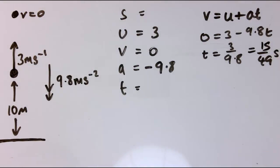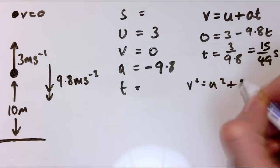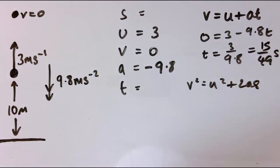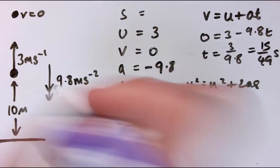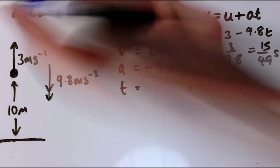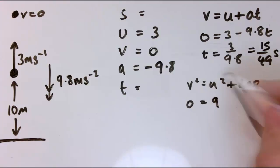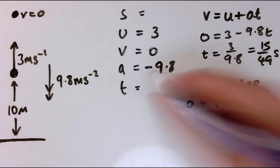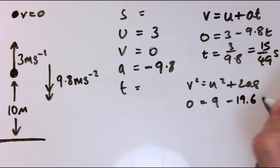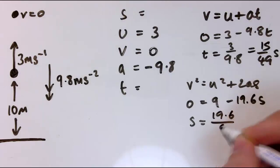Now, the one that has S, U, V and A in it is V squared equals U squared plus 2AS, so we can use that to work out the displacement from its initial position here when it's at the top. So at the top, V is zero, U is three, so that's three squared is nine, two times 9.8, so that's 19.6, but it's minus 19.6, S.